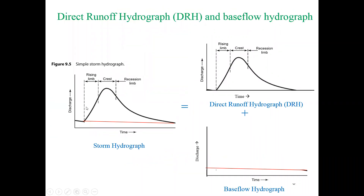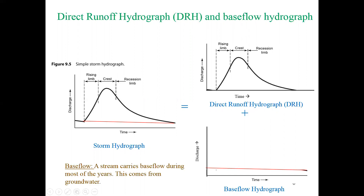If we split the storm hydrograph into two parts, we have the base flow — just the river flow, which comes from groundwater and stays relatively constant — and the direct runoff, which is the excess water the soil couldn't absorb. So this hydrograph is the summation of the direct runoff hydrograph (DRH) plus the base flow hydrograph.